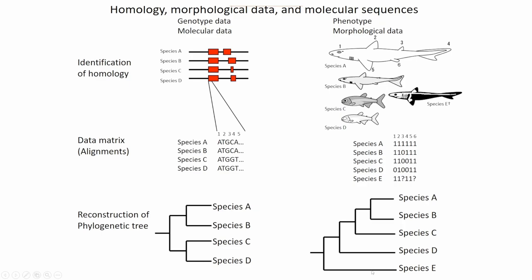We can reconstruct phylogenetic relationships from morphological data matrices. The number of molecular data points is really large, but it is hard to apply to extinct species. Nowadays some people extract DNA from extinct species but it's sometimes very difficult. The good point of morphological data is we can use data from extinct species and fossil data — but the problem is missing data is really missing or just missing, making it quite hard to distinguish.